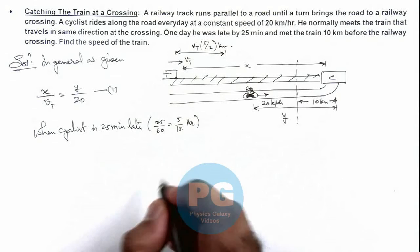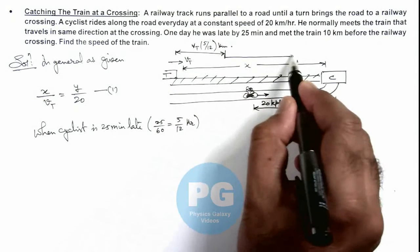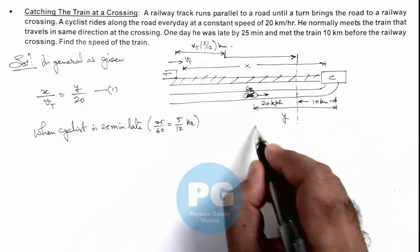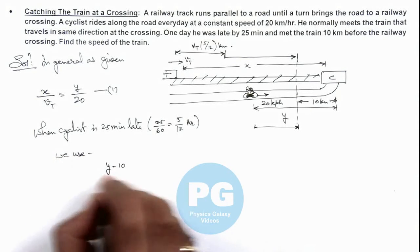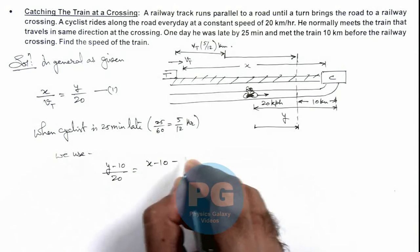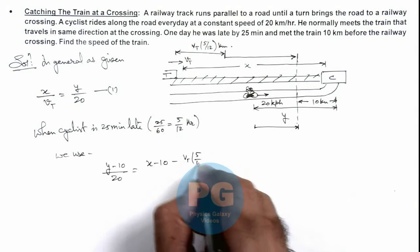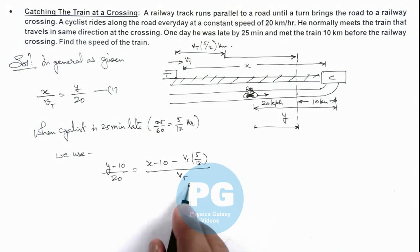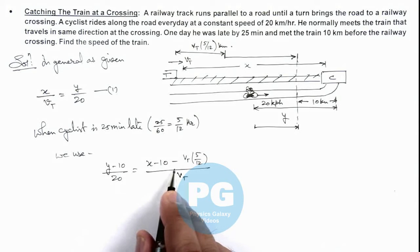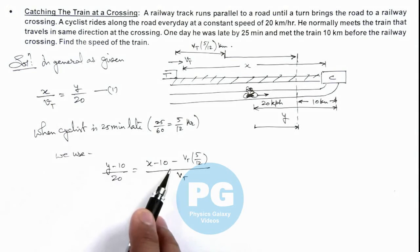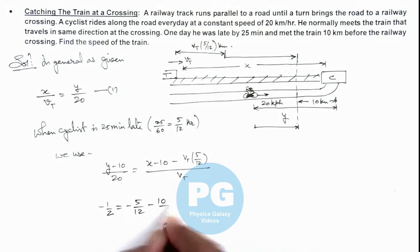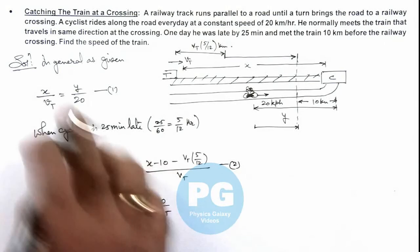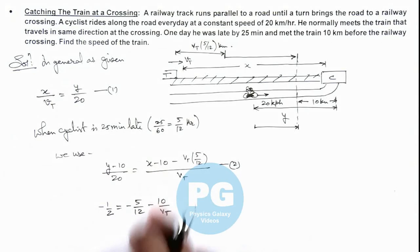So we can write: the time the train takes in covering the distance from that point to the crossing is the time taken by the cyclist in covering a distance of y minus 10. So we use: (y minus 10) divided by 20 is equal to (x minus 10 minus v_t multiplied by 5 by 12) divided by v_t. Simplifying and substituting values from equations 1 and 2, and eliminating x and y, we get: minus 1 by 2 equals minus 5 by 12 minus 10 by v_t.